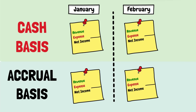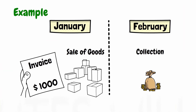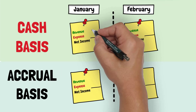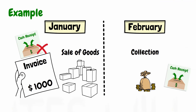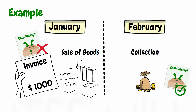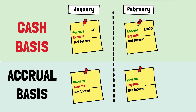Under the cash basis, the company sold the goods during January. However, this sale will not be shown as revenues in the income statement for January, as they were not received in cash during January. So, the revenue for January is zero. During February, the company collected this sale in cash, so the income statement for February will show revenue of 1000.